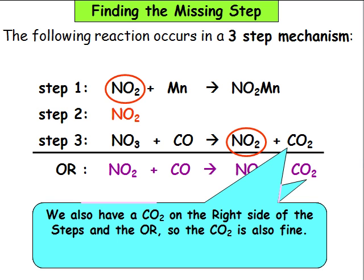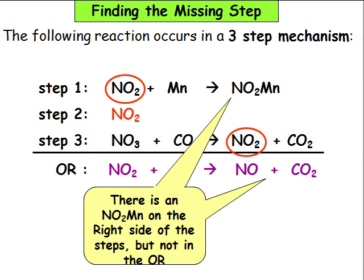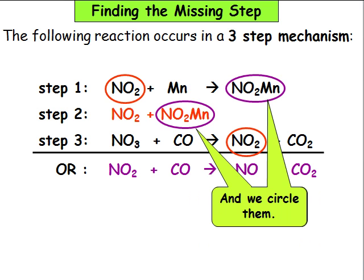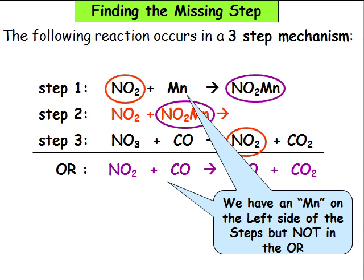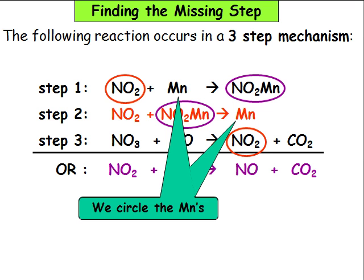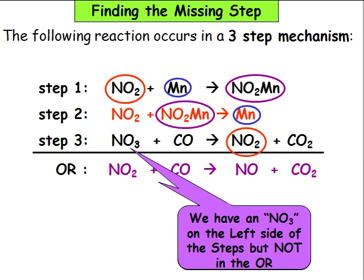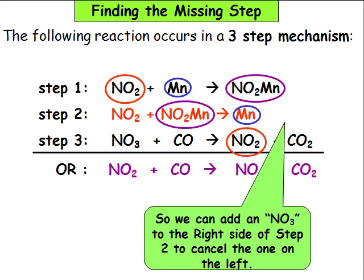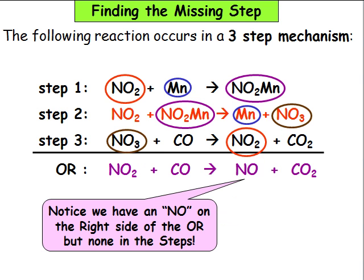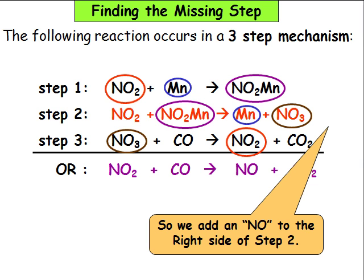We also have a CO2 on the right side of the steps and in the overall reaction, so CO2 is also fine. There is an NO2MN on the right side of the steps but not in the overall reaction, so we add an NO2MN to the left side of step 2 so we can cancel it, and we circle both. We have an MN on the left side of the steps but not in the overall reaction, so we add an MN to the right side of step 2 to cancel it, and circle the two MNs. We have an NO3 on the left side of the steps but not in the overall reaction, so we add an NO3 to the right side of step 2 to cancel it, and circle the two NO3s. We have an NO on the right side of the overall reaction but none in the steps, so we add an NO to the right side of step 2.